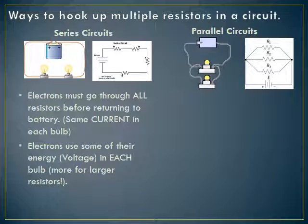The other kind of circuit is known as a parallel circuit. Instead of the electrons being forced to go through both bulbs, the electrons actually have a choice — they can either go through the top bulb and straight back to the battery, or go through the bottom bulb and straight back. Electrons are logical: if they go through one light bulb and see a path back to the positive side of the battery, there's no way they're going to choose to go through another light bulb just for the sake of it.